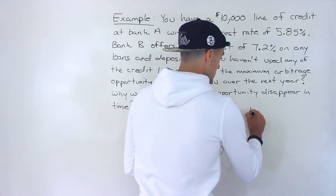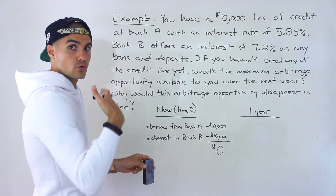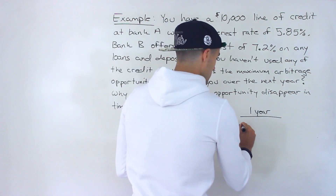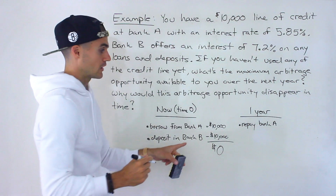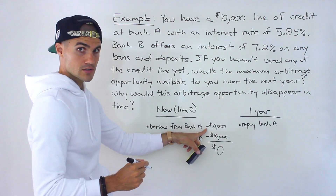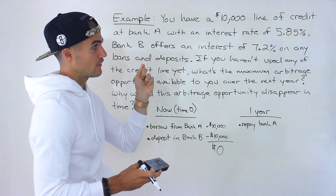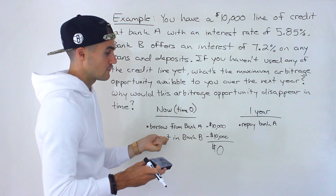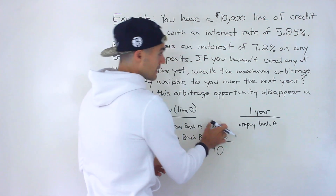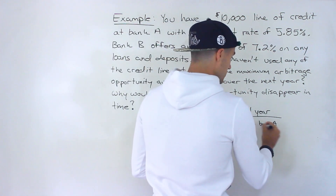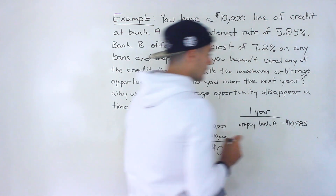In one year, since you borrowed from Bank A, you're going to have to repay them. You repay the $10,000 principal plus the interest. Borrowing at 5.85%, that's 0.0585 times $10,000 equals $585 in interest. So you repay the $10,000 plus $585, giving a negative cash flow of $10,585.